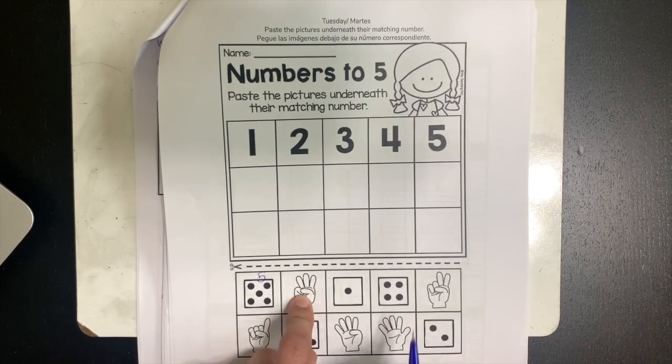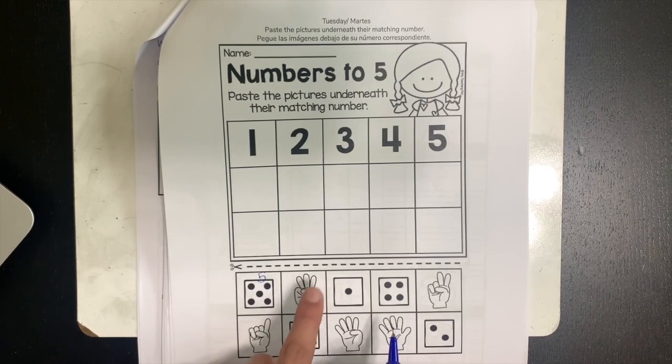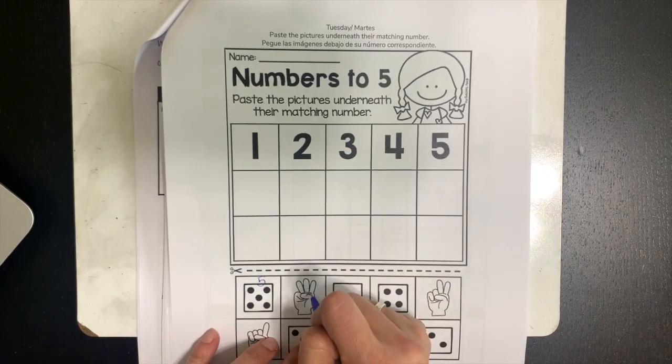Then I see this next one. This hand has 3 fingers. 1, 2, 3. I'll write the number 3.